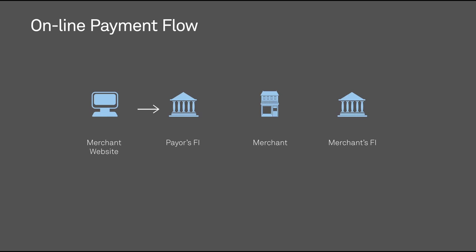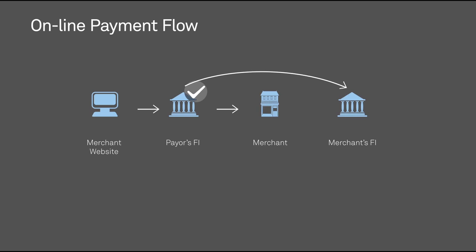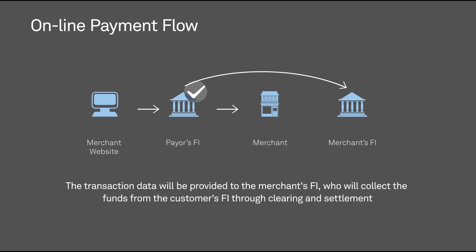Then, the customer's FI obtains the customer's authorization for the transaction. The customer's financial institution sends a message to the merchant and the customer advising whether the transaction was successful. If successful, the transaction will result in a payment to the merchant's account. The transaction data will be provided to the merchant's FI.